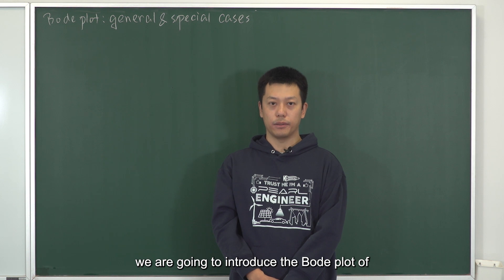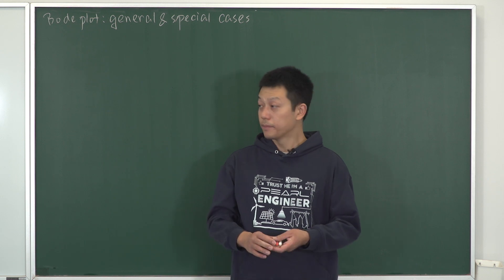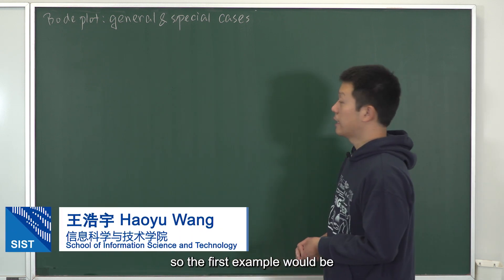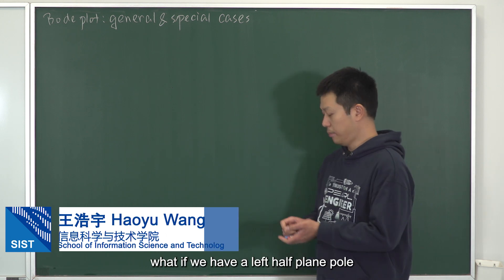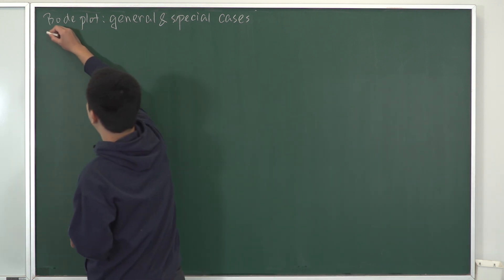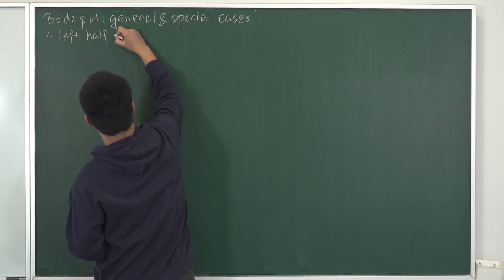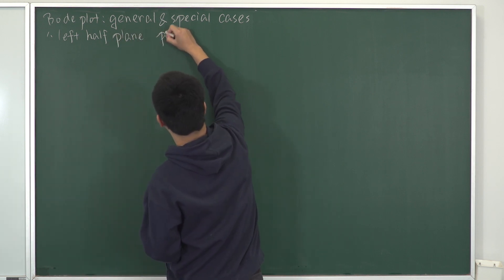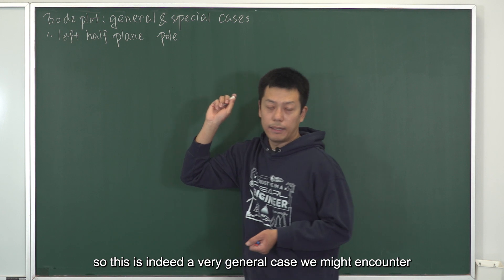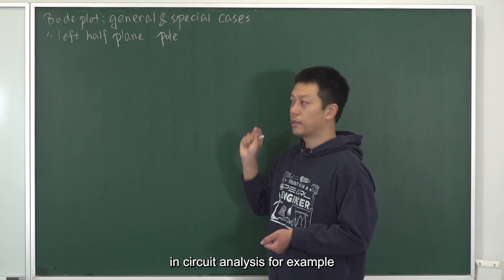In this section, we are going to introduce the Bode plot of several very general transfer functions. The first example would be: what if we have a left half-plane pole? This is indeed a very general case we might encounter in circuit analysis.